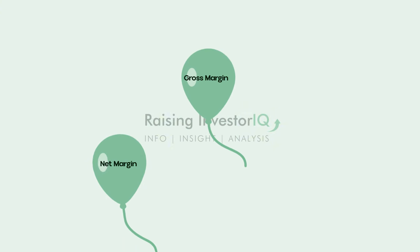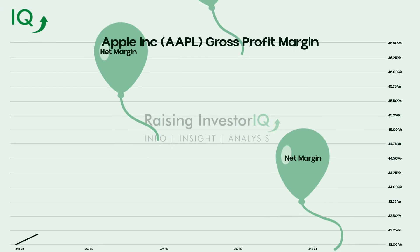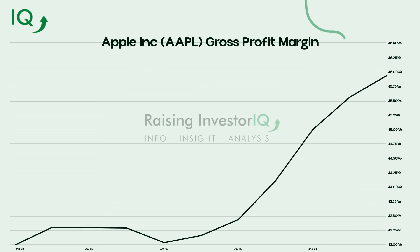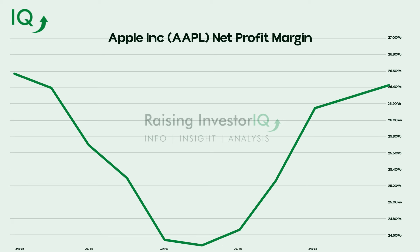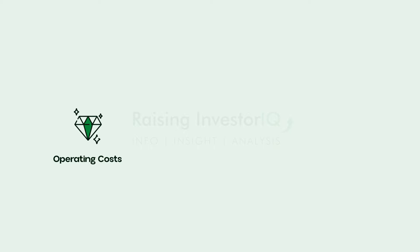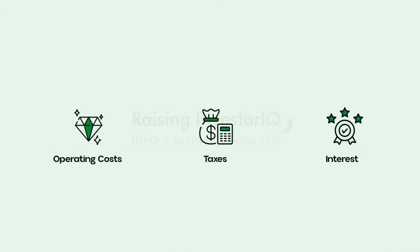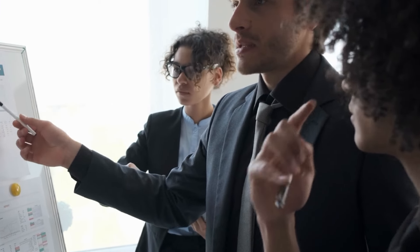It's also essential to consider gross margin in conjunction with other financial metrics, especially net margin. While gross margin gives you insight into how well a company is managing its production costs, net margin provides a more comprehensive view of overall profitability. Net margin accounts for all expenses — including operating costs, taxes, interest, and other non-operational expenses — and shows how much of each dollar in sales a company actually keeps as profit.